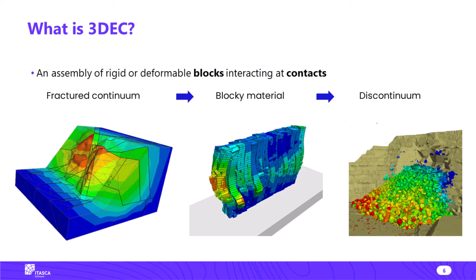So what is 3DEC? At its heart, it is an assembly of rigid or deformable blocks interacting at contacts. This idea of blocks being deformable or rigid and interacting with each other gives a whole spectrum of possible behaviors. On the left you can imagine something that's mostly a continuum with some small number of joints or fractures or faults, progressing to a blocky masonry structure, and then to a true discontinuum where you have many pieces moving relative to each other.